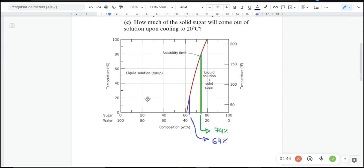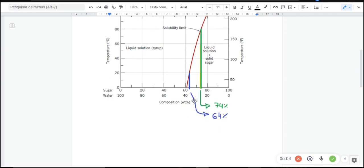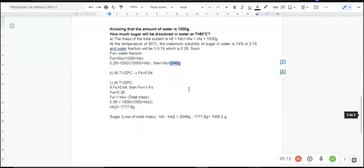what will be the composition of the saturated liquid solution at this new temperature of 20 Celsius degrees? At 20 Celsius degrees, we can look here, when we take this line and counter with this red line of the solubility limiting, and we find this new blue line, which we find the 64% content of sugar. That is the fraction of sugar at temperature of 20 Celsius degrees.